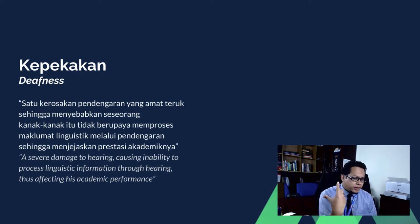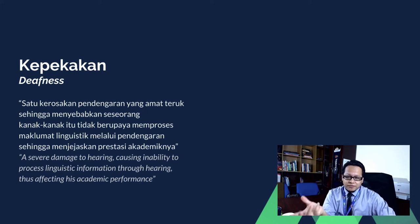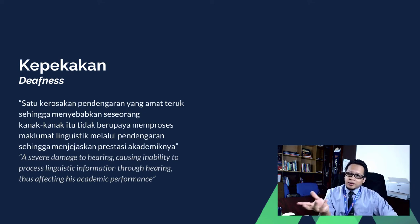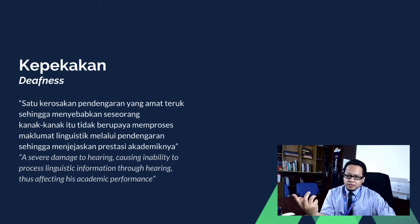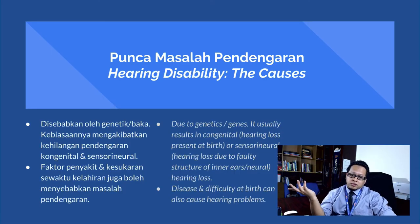As you can see, there is a difference between deafness and hearing impairment. The difference lies in the degree of how severe the hearing loss is. If it is mild, then it is classified as hearing impairment, but if it is severe, it falls under the category of deafness.